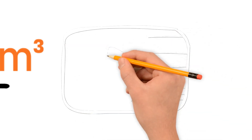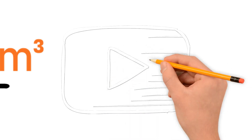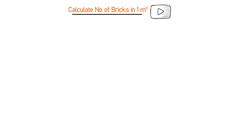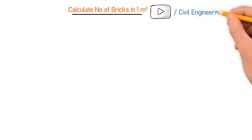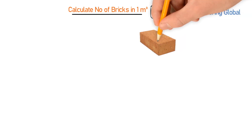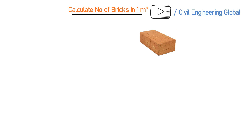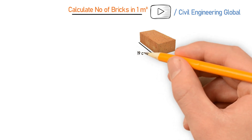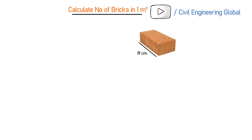So let's take an example of a standard brick. As we all know, the size of a standard brick is: length is equal to 19 centimeters, breadth is 9 centimeters, and height is also 9 centimeters.